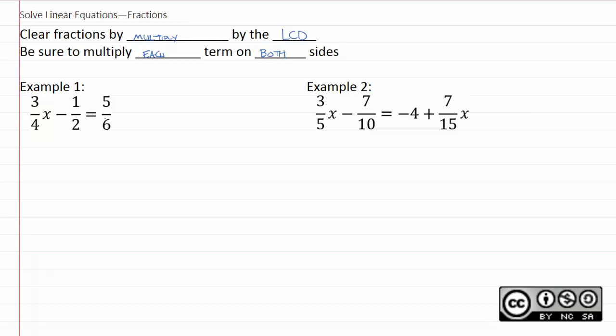Let's take a look at example one here. Here we have three denominators: six, two, and four. We're going to clear the fractions by multiplying by a number that is divisible by six, two, and four.